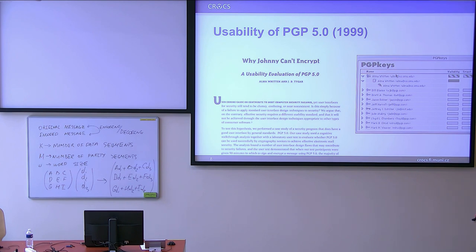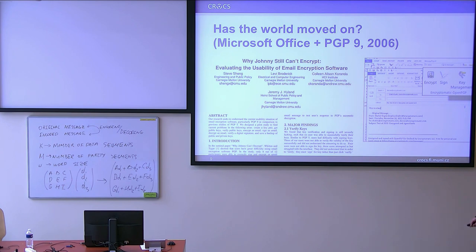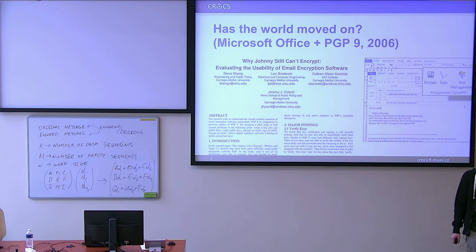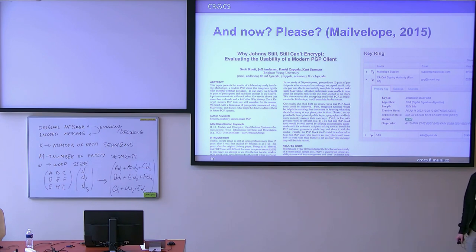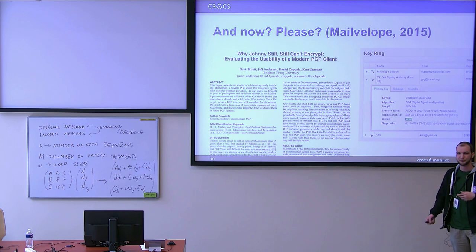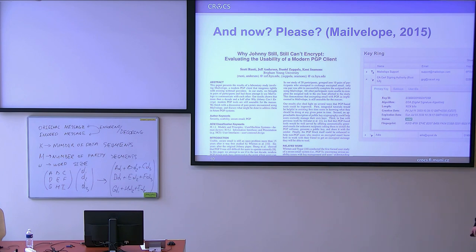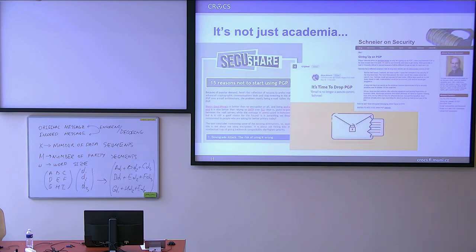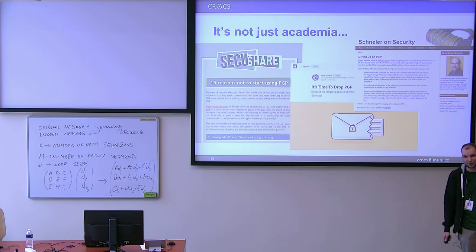Then hopefully the world moved on. In 2006 someone did another study, starting the tradition of 'Johnny Can't' articles in academia. PGP 9 combined with Outlook Express basically did not get any better results than the previous ones. Still a little later, the world still hadn't moved on — because in 2015, Mailvelope, a browser plugin doing PGP, basically still had the same usability flaws, and people were still unable to send signed or encrypted email. It's not just academia — kind of everyone knows this on the internet, and we are not even pretending PGP or encrypted email as implemented now is particularly usable.